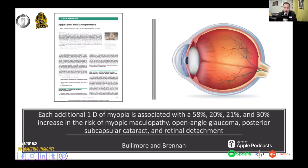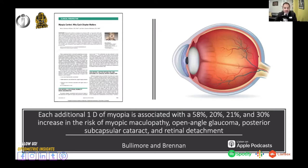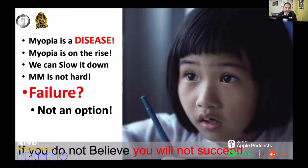Each diopter matters. Mark Bullimore and Noel Brennan put together statistical analysis showing that each additional diopter of myopia is associated with a 58% increased risk of maculopathy, a 20% greater risk of open-angle glaucoma, a 21% increase in posterior subcapsular cataract, and a 30% increase in retinal detachment. Going from one diopter to two, your maculopathy risk increases by 58%; from two to three, it increases another 58%. So keeping a child from going from minus one to minus two reduces their maculopathy risk by 58%.